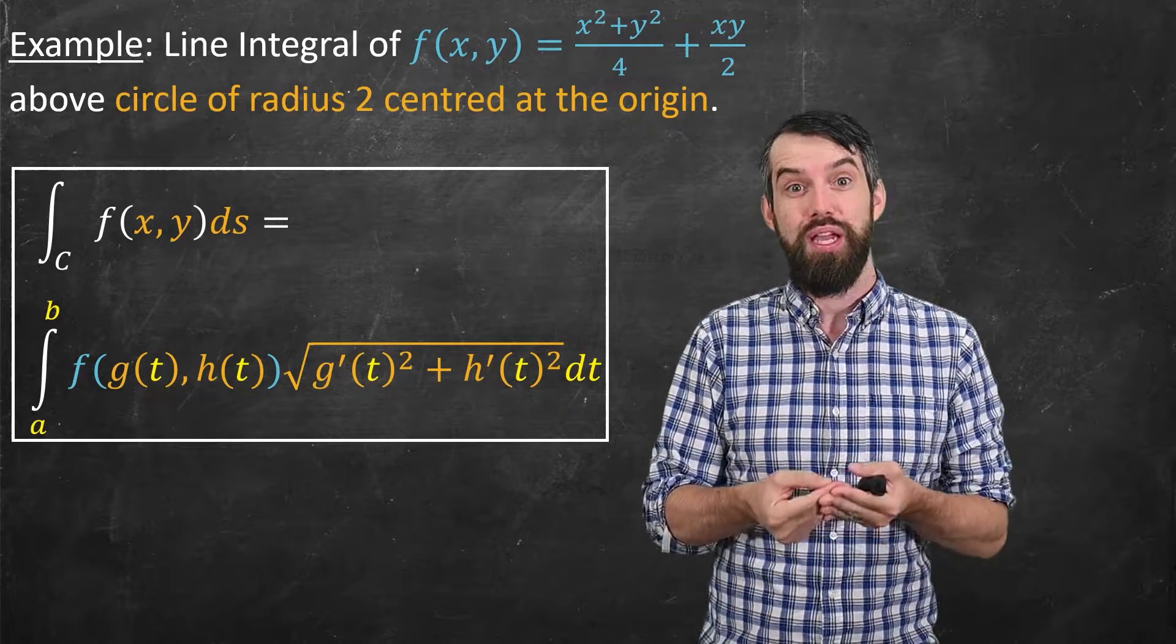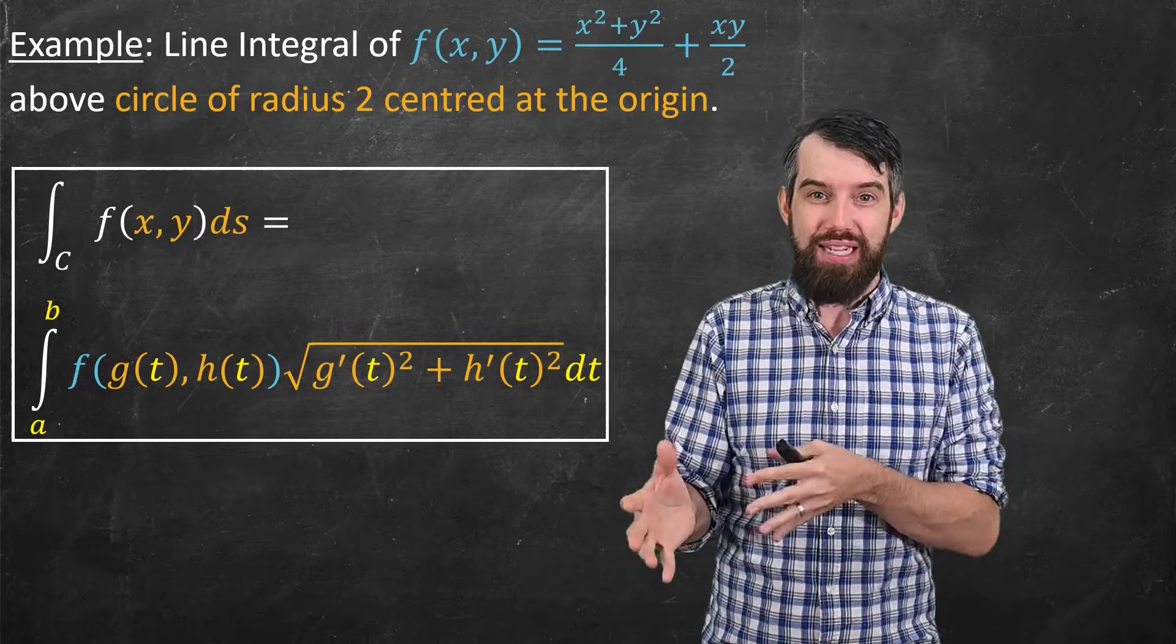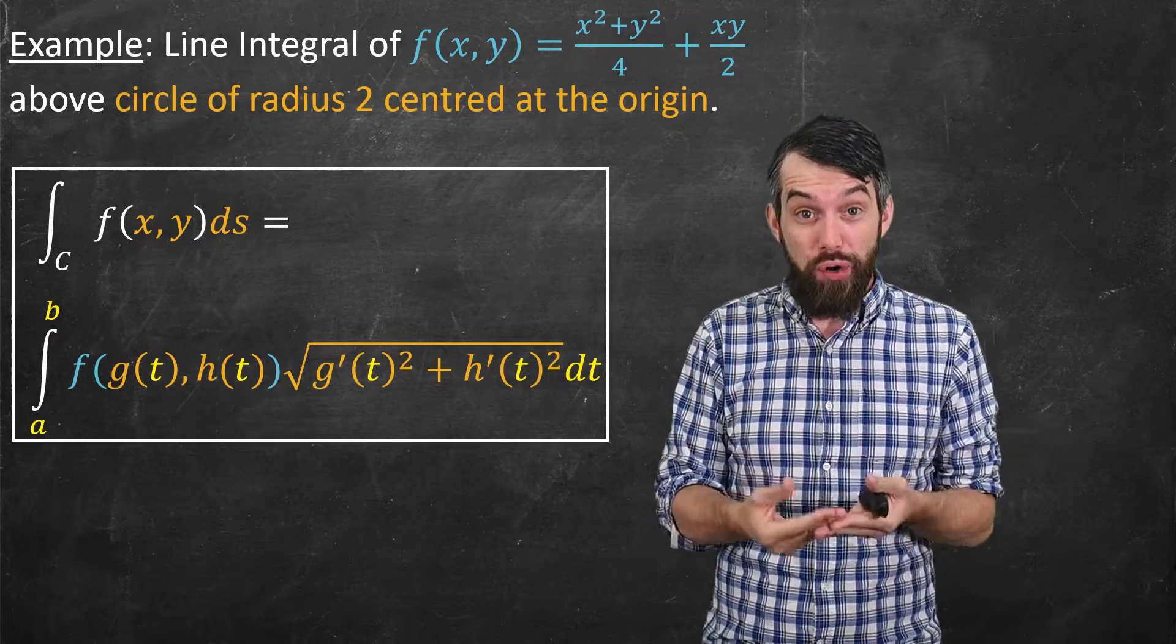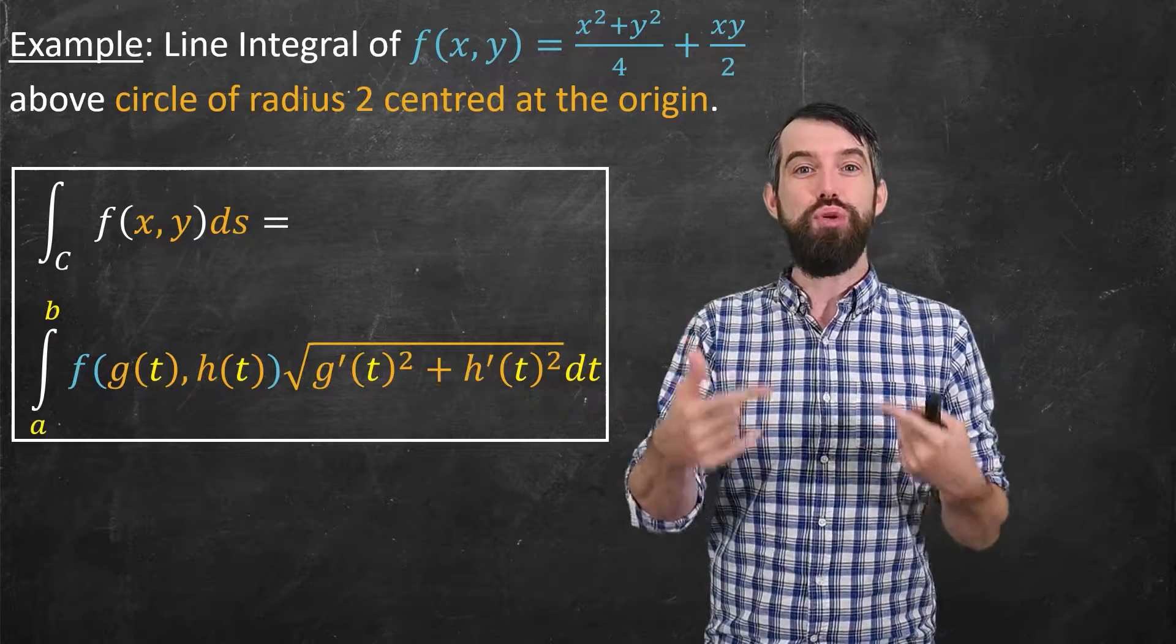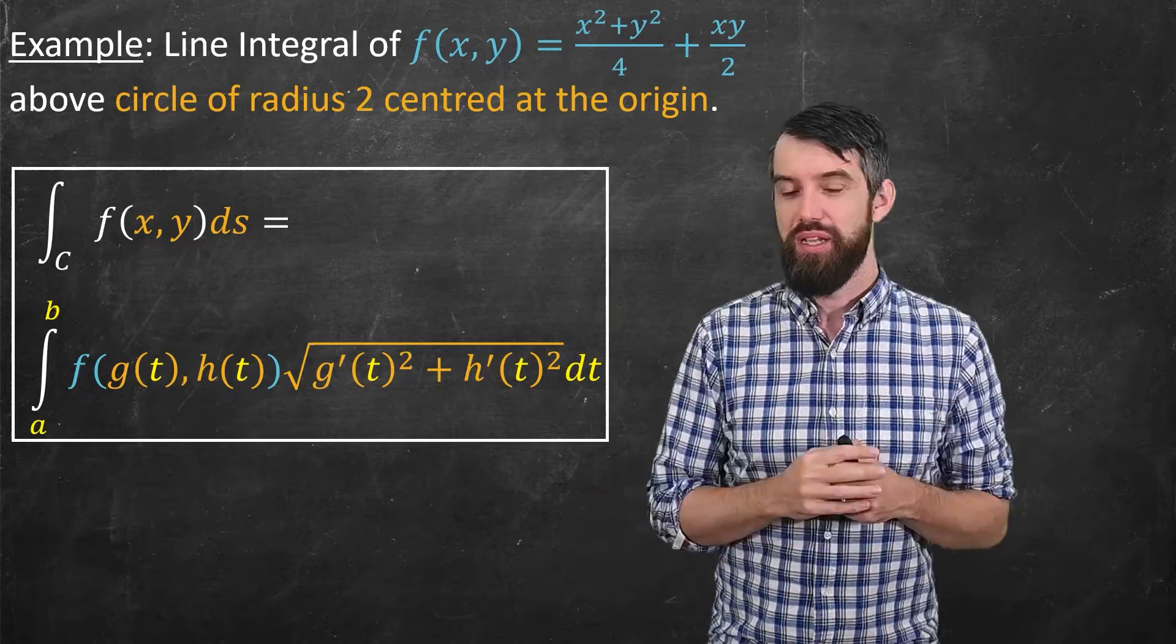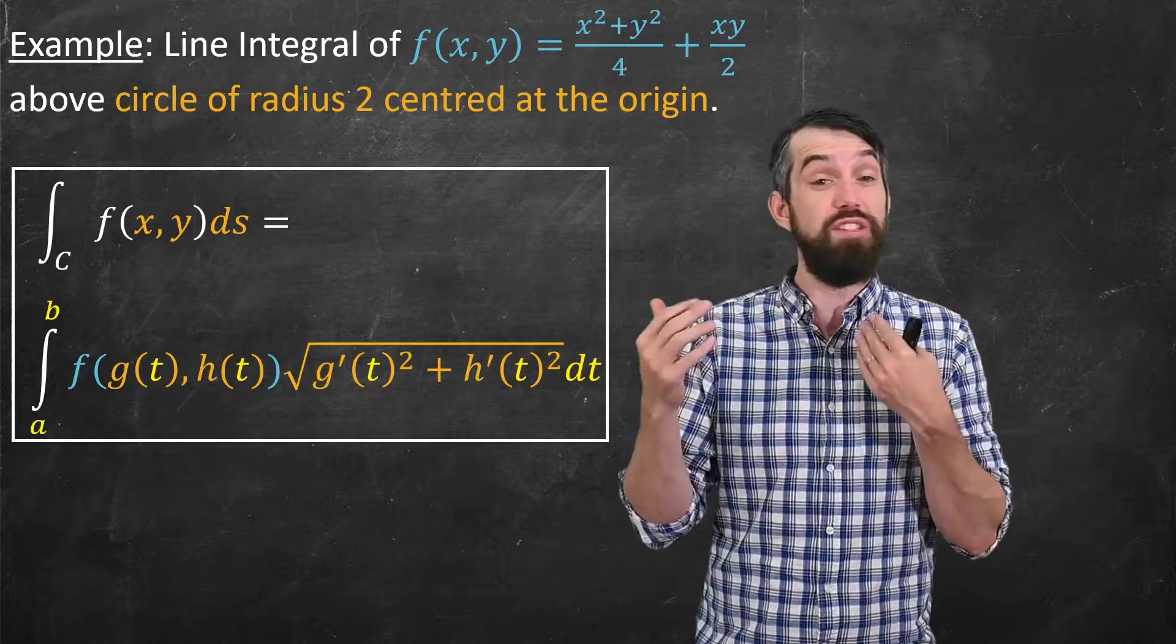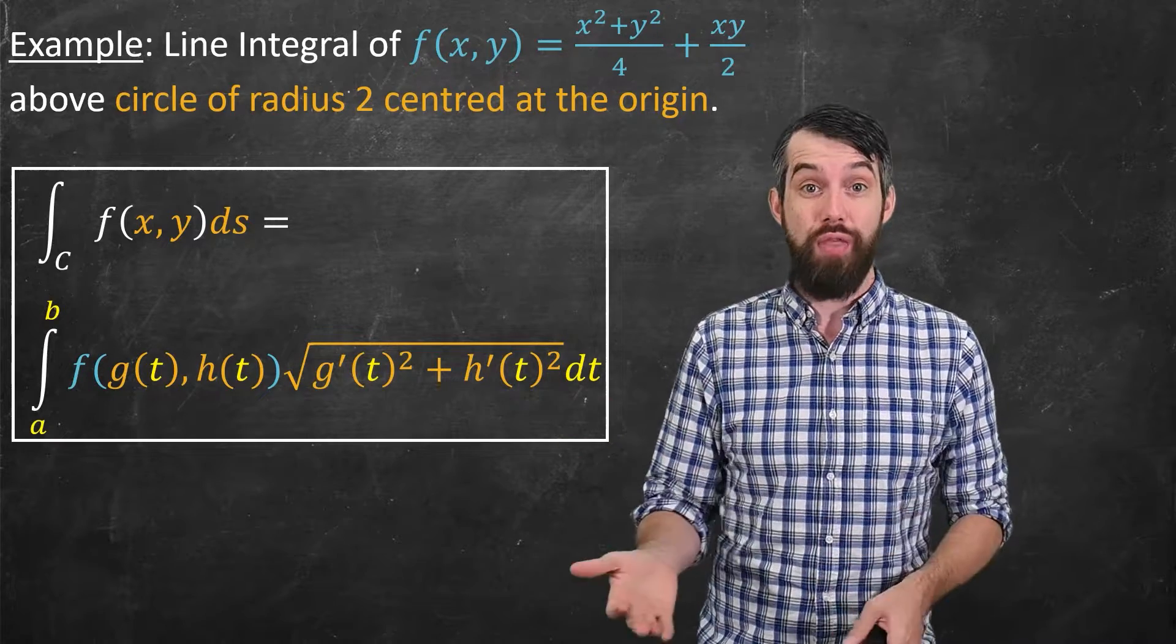But the way I compute this is the right-hand side, where if I can parameterize my curve and my function in terms of t, then I have this formula to be able to compute it explicitly as just a single variable calculus problem in terms of t. So the real challenge for me is to come up with some parameterization that gives me these functions g of t and h of t.